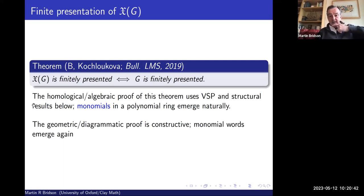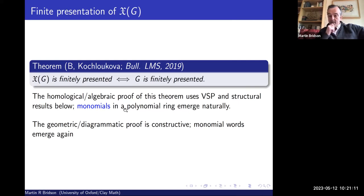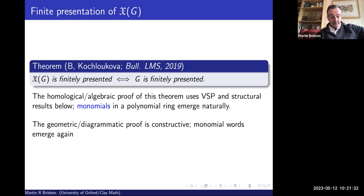The algebraic proof uses the VSP theorem — which Gilbert had a hand in — and some other structural results where monomials in polynomial rings emerge naturally. The geometric proof I'm going to describe is constructive: it says what the relations are, and once again these monomial words play an important role.